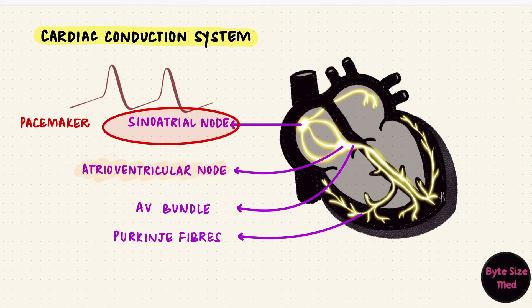The other structures, though capable of self-excitation, get suppressed, because the sinoatrial node discharges faster than them. So before they can reach threshold, the sinoatrial node has already sent an impulse.